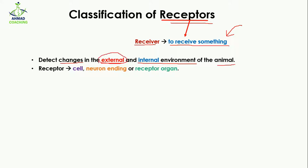When we talk about the external environment, it means any change outside the body — for example, temperature change, water level change, or humidity. When we talk about the internal environment, it means changes inside the body — for example, water level changes, food digestion, hunger, or pain.